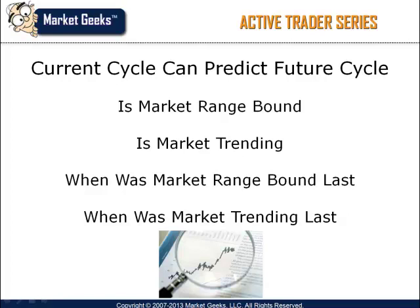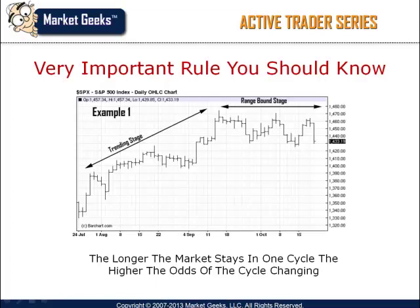Once I determine the current trading characteristics, I immediately look back to see when the market exhibited the opposite characteristics. One of the most important rules every trader should know is: the longer markets trend and exhibit one-way momentum, the higher the odds that a range-bound period is approaching. Conversely, the longer the market is trendless or range-bound, the higher the odds that strong directional momentum is approaching.